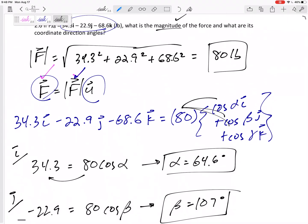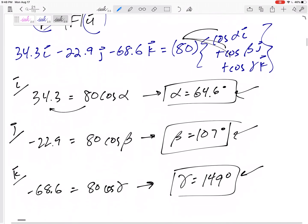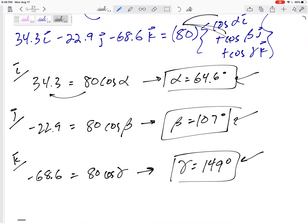I wanted the magnitude, that's 80. Coordinate direction angles, you can just leave it separately as alpha is this, beta is this, gamma is this. Let's talk about this and see if this makes sense. These two components were negative. What do you notice about these two angles? Obtuse.